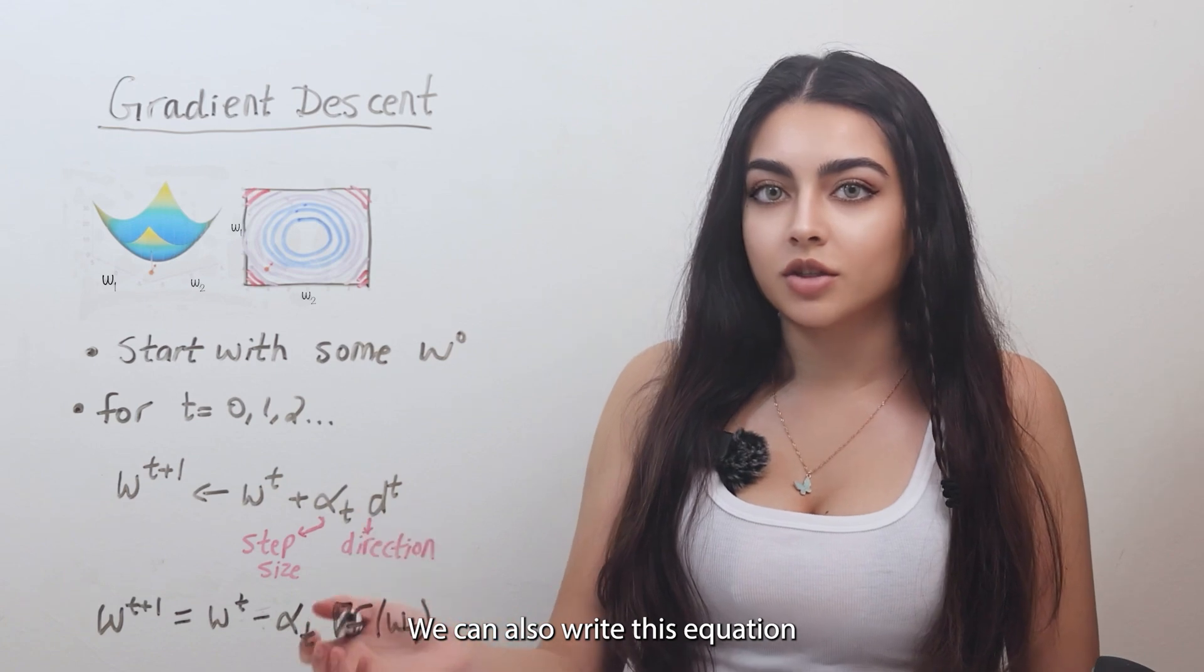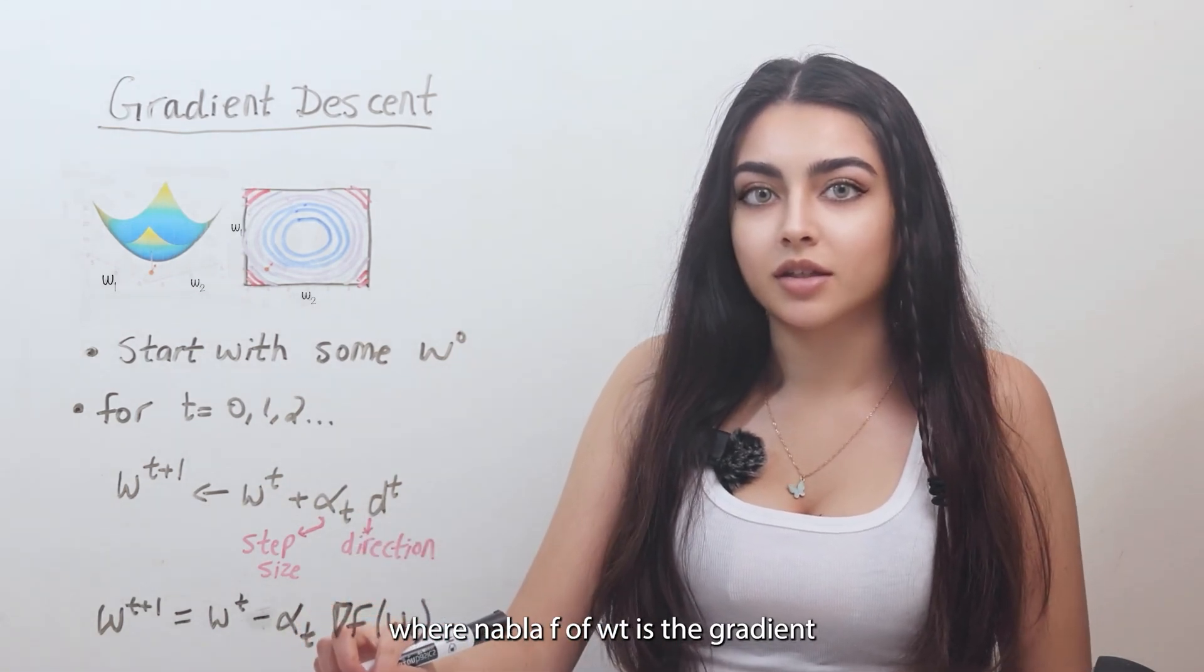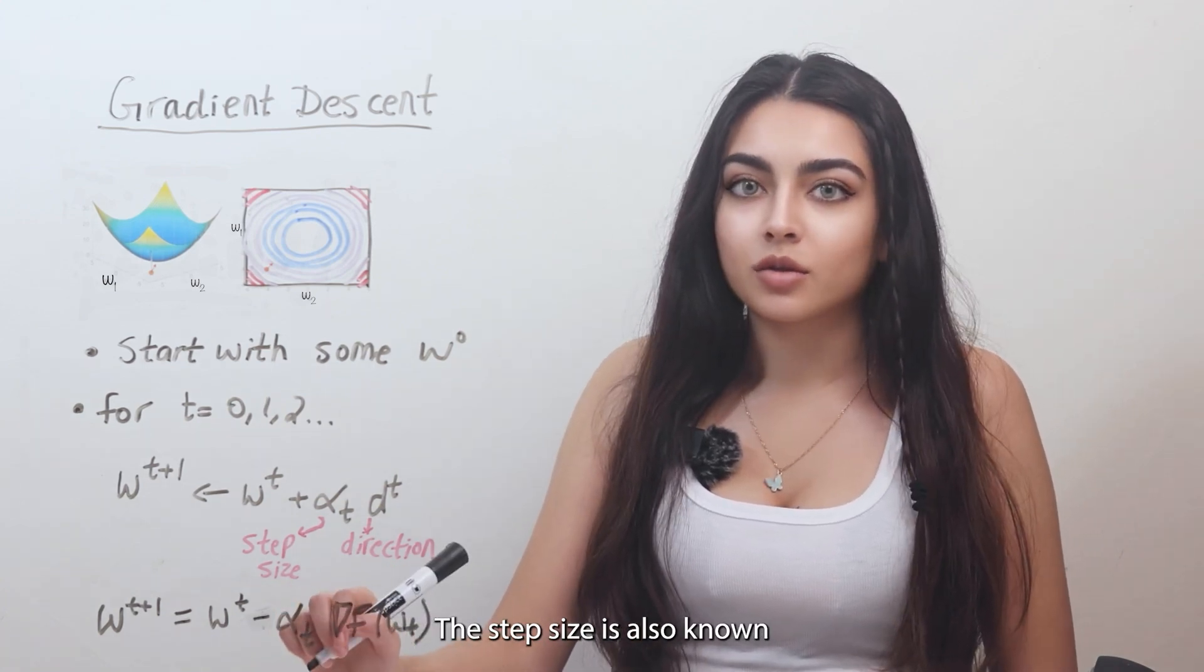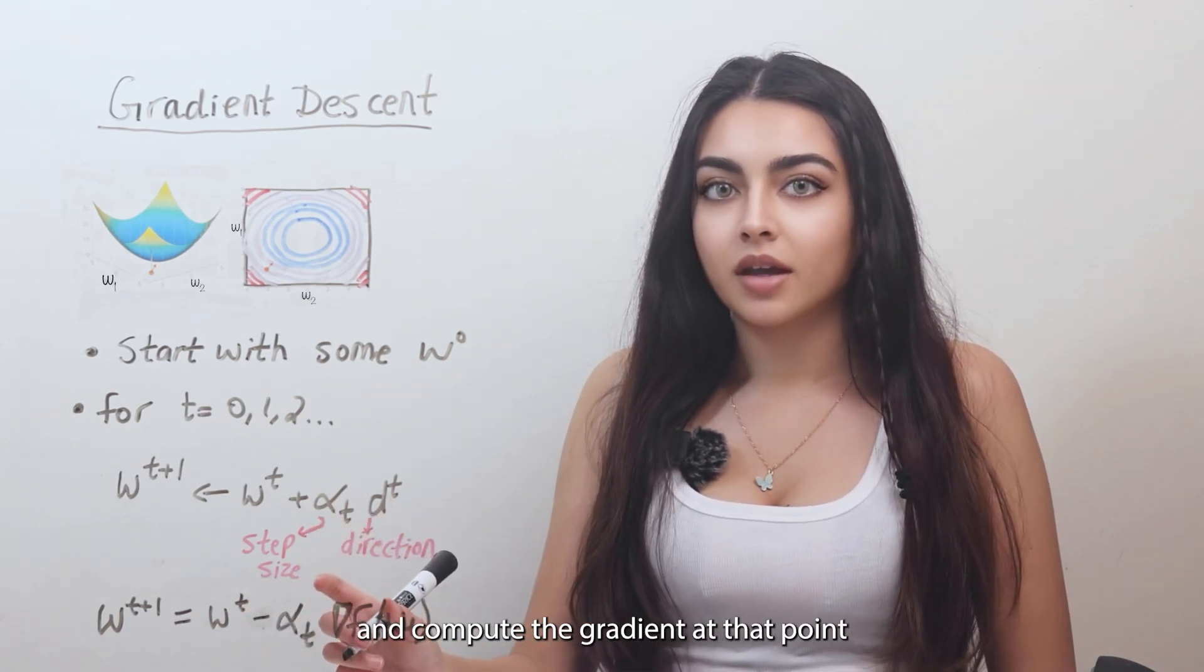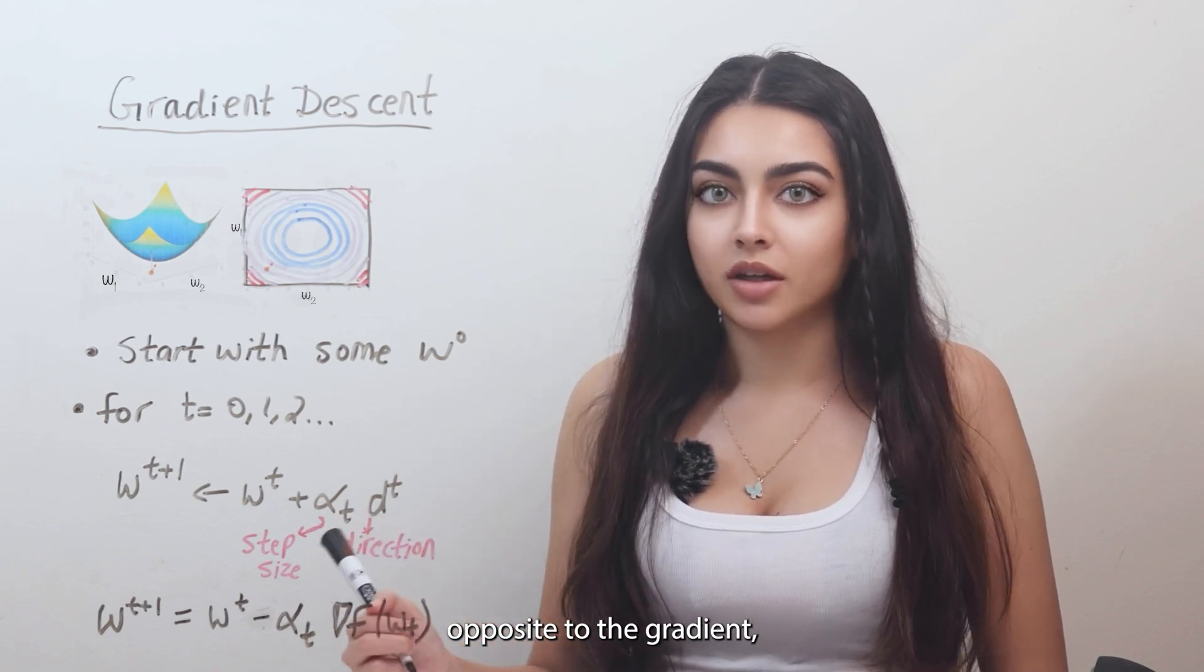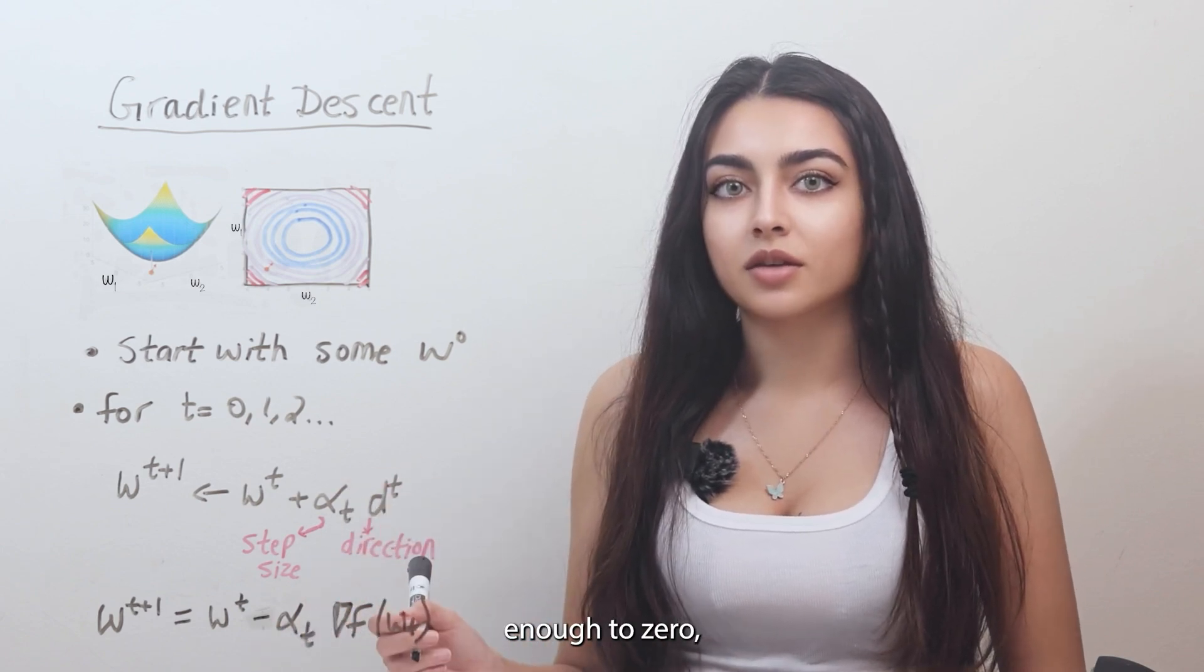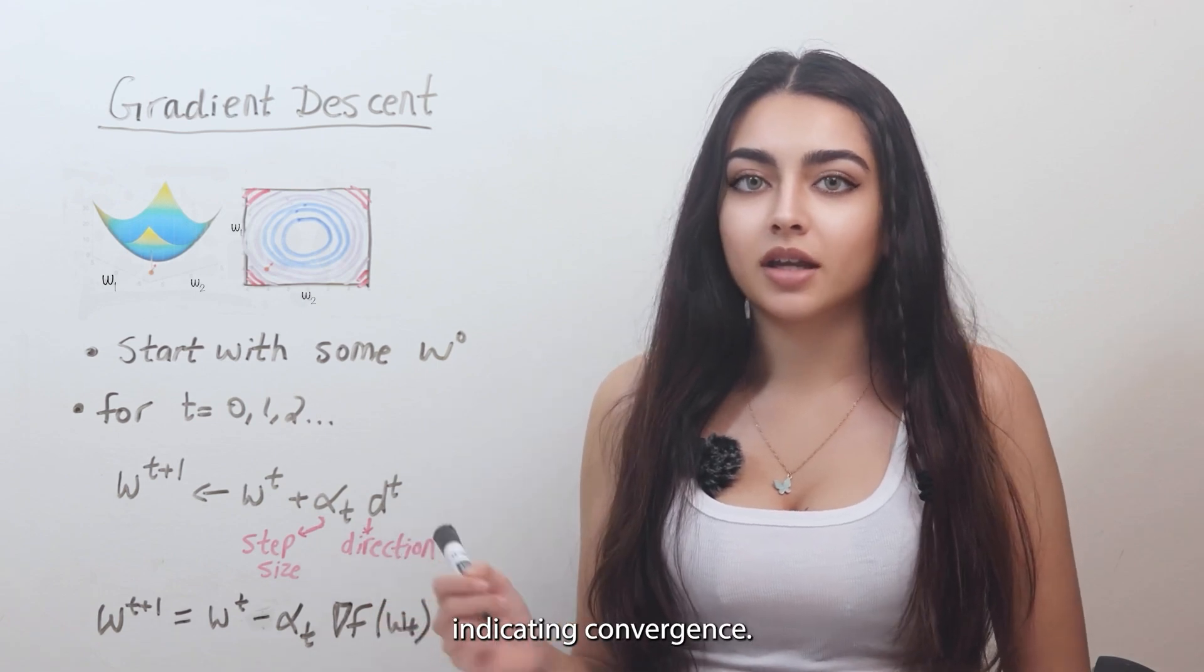We can also write this equation as follows, where nabla f of wt is the gradient of the loss function at wt, and alpha is the step size. The step size is also known as the learning rate. In other words, we can take the current value of w and compute the gradient at that point and move in the direction opposite to the gradient, and the size of the step is controlled by alpha. We continue updating w until the gradient is close enough to zero or changes in w become very small, indicating convergence.